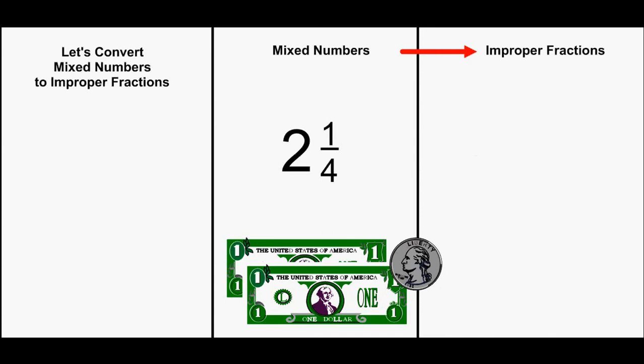Here, I have 2 dollars and 1 quarter, represented by 2 and 1 fourth.